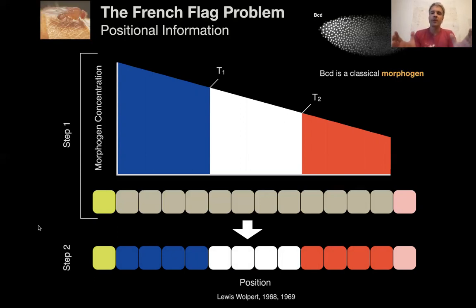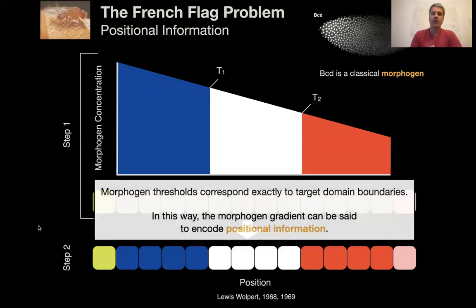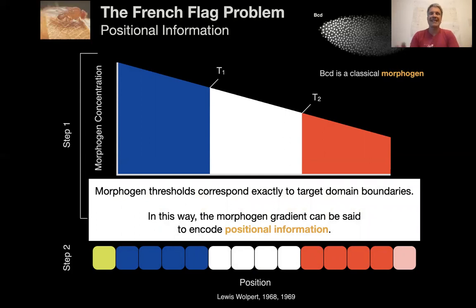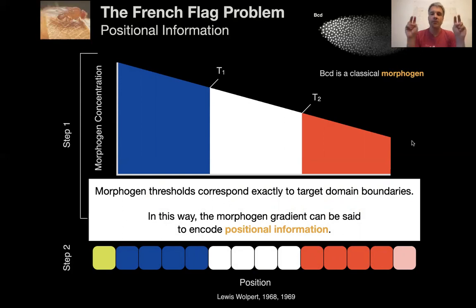Development in Wolpert's model is fundamentally seen as a two-step process. In the first step, cells in the tissue can sense different concentration thresholds in the morphogen gradient. In the second step — the differentiation step — they switch on different target genes, represented by the different colors blue, white, and red, forming the French flag. Importantly, morphogen thresholds correspond exactly to where the target domain boundaries lie in the tissue. In this way, the morphogen gradient can be said to encode positional information. By reading the concentration of the morphogen, the cell somehow knows where it is in the tissue and interprets this by switching on differentiation target genes.